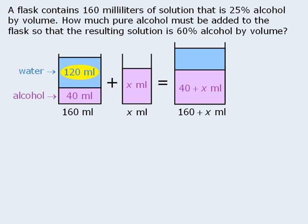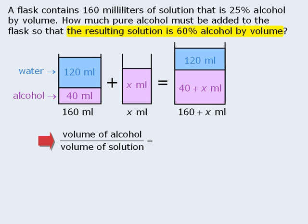Finally, since the original solution contains 120 mL of water and the other solution contains no water, the new solution must contain 120 mL of water. The question tells us that we want the new solution to be 60% alcohol by volume, so we want the following fraction to equal 60%, or 60 over 100. From our sketch, we can see that the volume of alcohol in the new mixture is 40 plus x mL, and the total volume of the new mixture is 160 plus x mL.